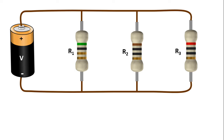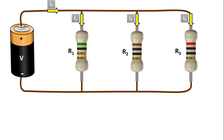Let's try to learn this law through the circuit here. Let the mains current be IT, the current through the R1 resistor be I1, the current through the R2 resistor be I2, and finally the current through the R3 resistor be I3.